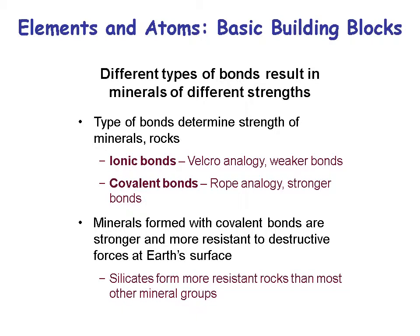The different types of bonds result in minerals of different strengths. You can think of ionic bonds like Velcro — easy to pull apart. A covalent bond is like a rope — really hard to break. Minerals formed with covalent bonds are stronger and more resistant to destructive forces at Earth's surface. That's why you find quartz sand — quartz has a covalent bond and the silica is really hard to break.